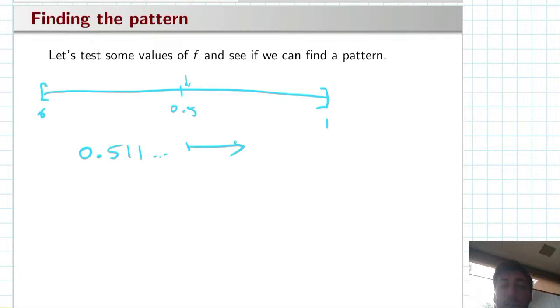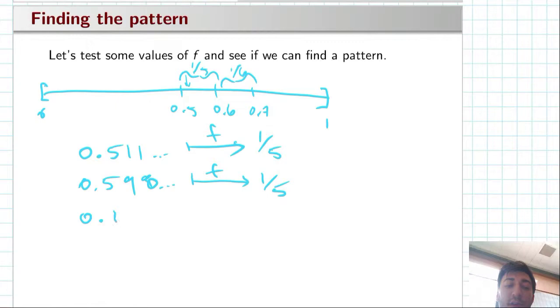It has some expansion 0.511 whatever, and we know that under f is just going to be taken to one over five. But what if we picked any irrational number between 0.5 and 0.6, so maybe 0.598 whatever? Then under f it's still going to be one over five. So any irrational number in that range is still one over five. Similarly, between 0.6 and 0.7 it's going to be one over six and so on.